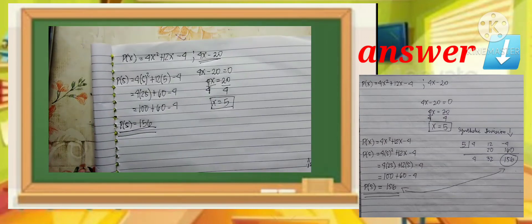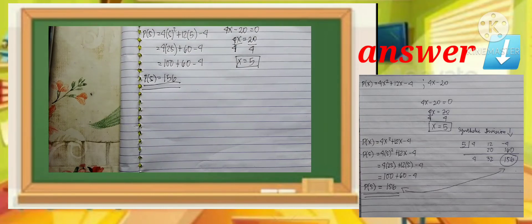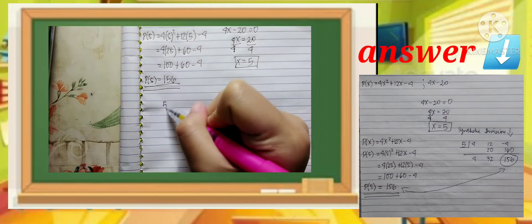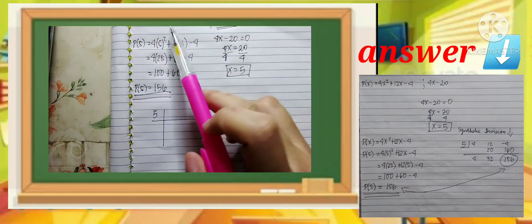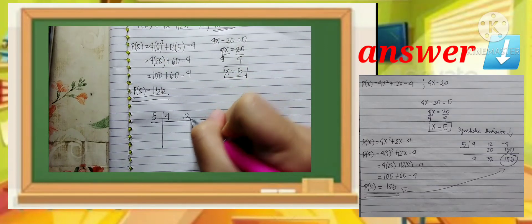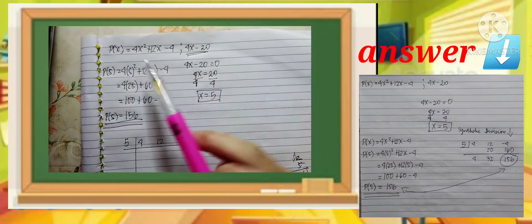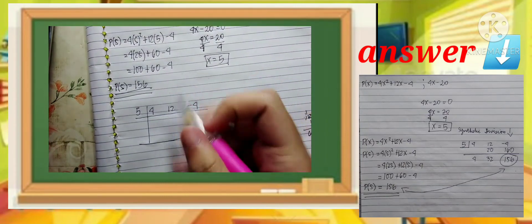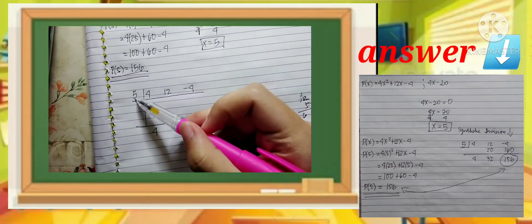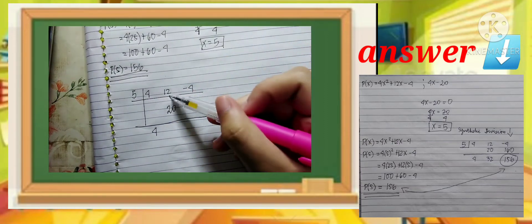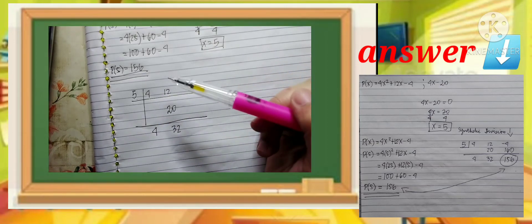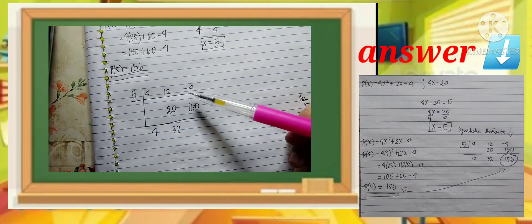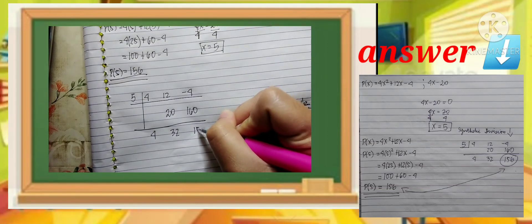But if you want to make sure your answer is correct, you can use synthetic division. Our x is 5. The given is 4, 12, and negative 4. Bring down 4. 5 times 4 equals 20. 12 plus 20 equals 32. 5 times 32 equals 160. Negative 4 plus 160 equals 156.